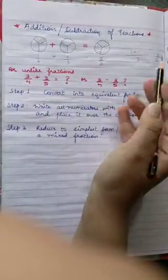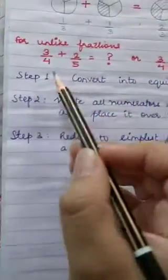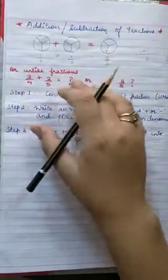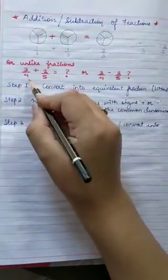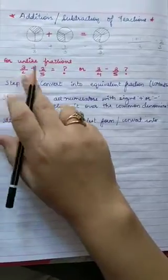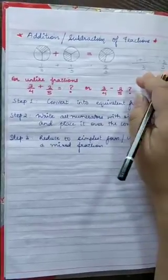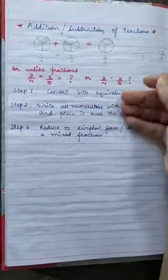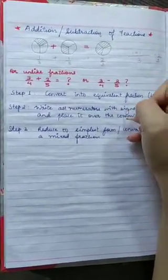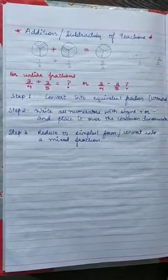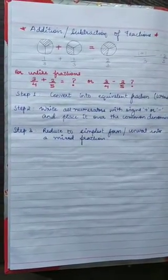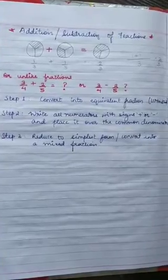When we have like fractions, the denominator is the same. What we do is add the numerators, which gives us the answer. But when the denominators are different, we follow some steps: first, convert the fractions to equivalent fractions with a common denominator, then add or subtract, and finally simplify — writing the answer in its simplest form or as a mixed fraction if it is improper.